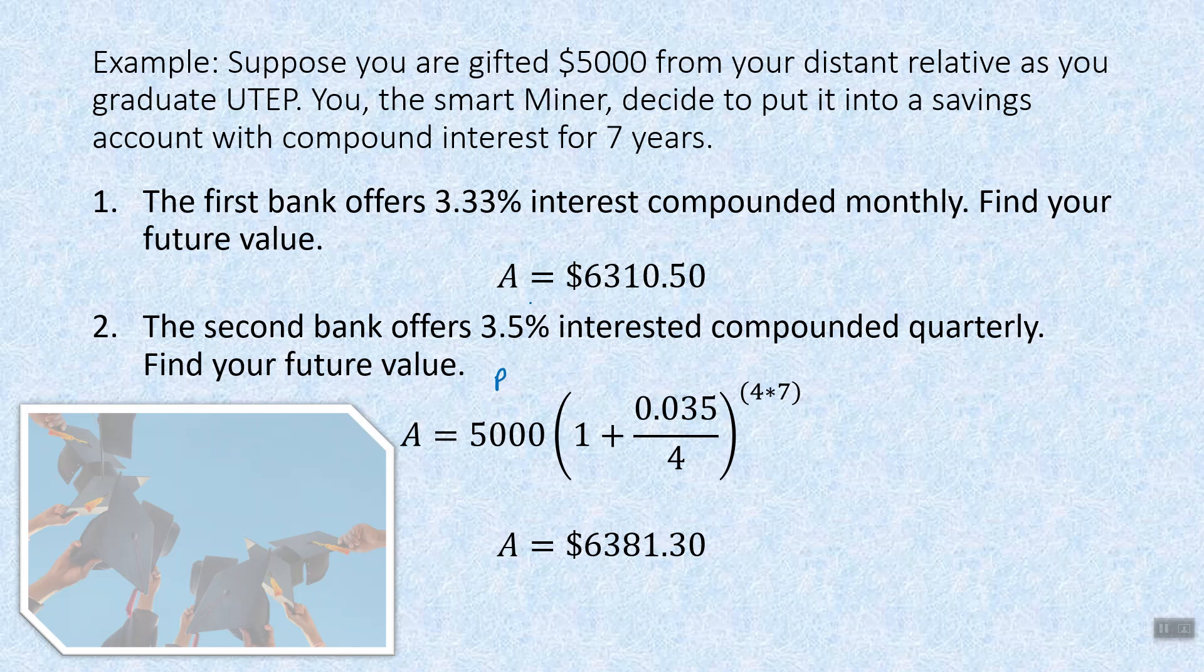Again, we have our principal or P value. We have our interest rate, 3.5%. So per 100, three cents. And that five comes after. This is quarterly. How many quarters in a full year? There's four of them and seven years again. And we'll enter this into the calculator and we'll get $6,381 and 30 cents. So even though this compounds less often, that interest rate was enough. So then I make more with the second account.